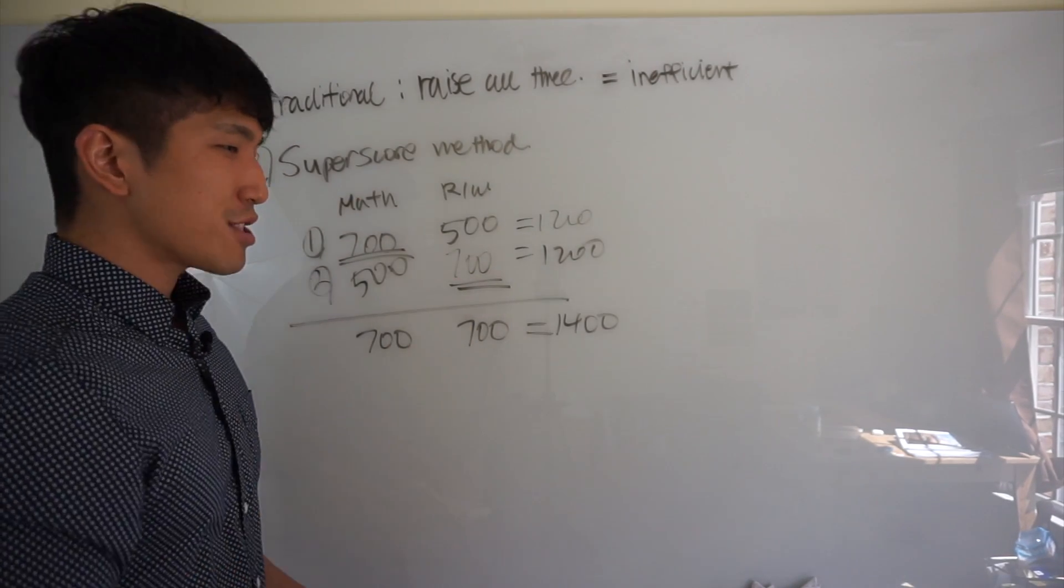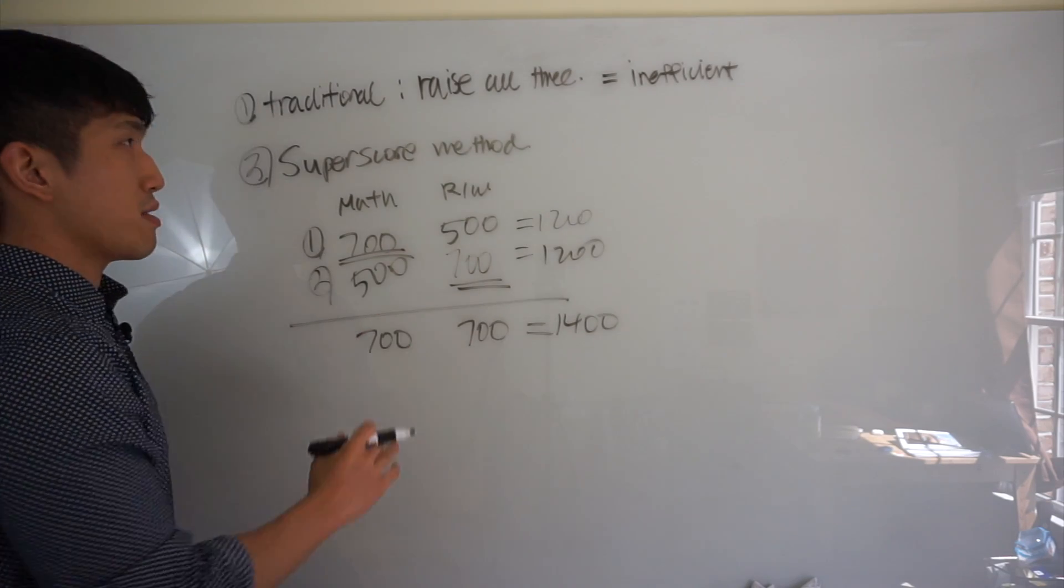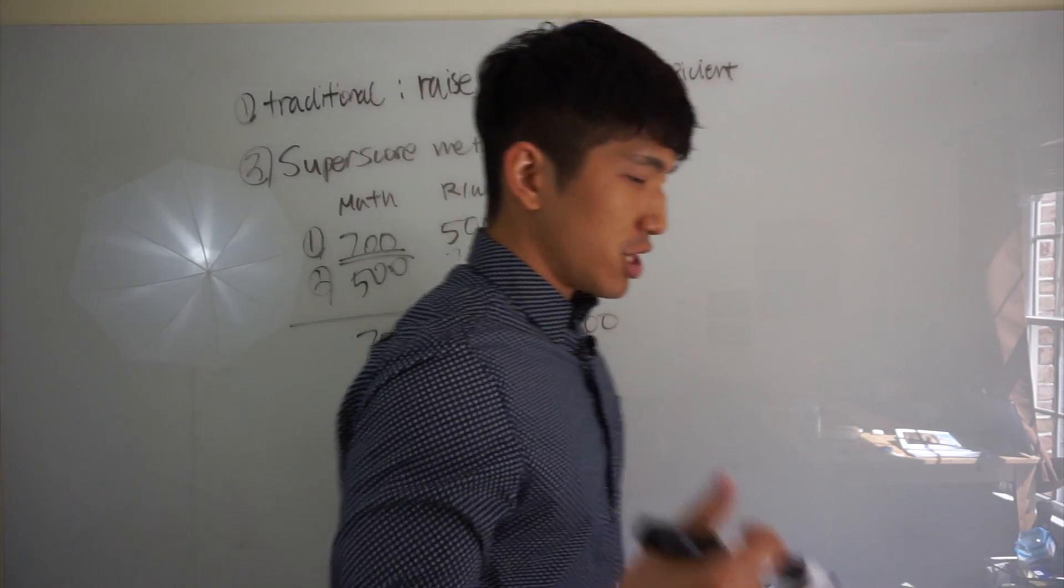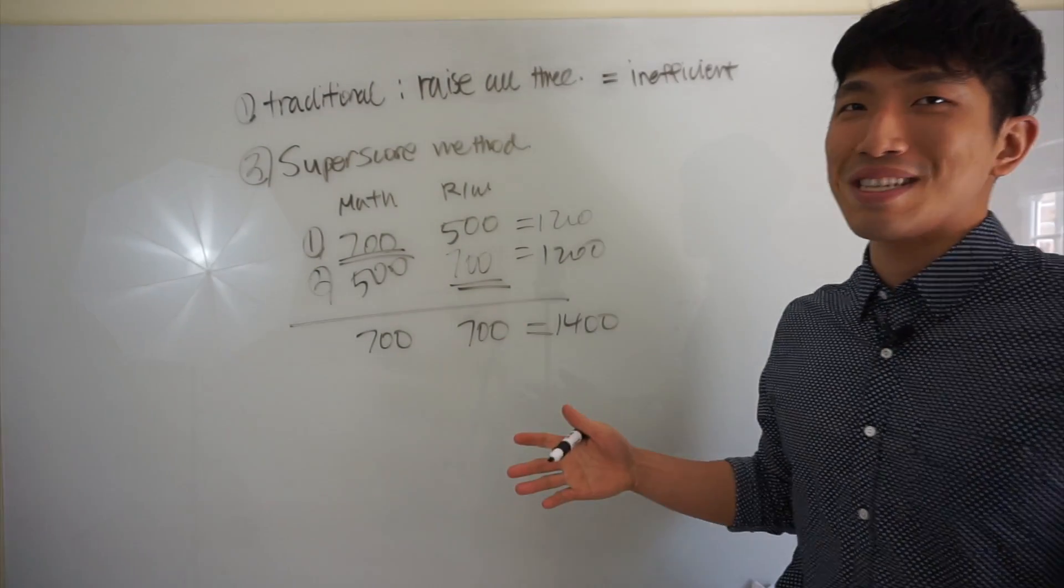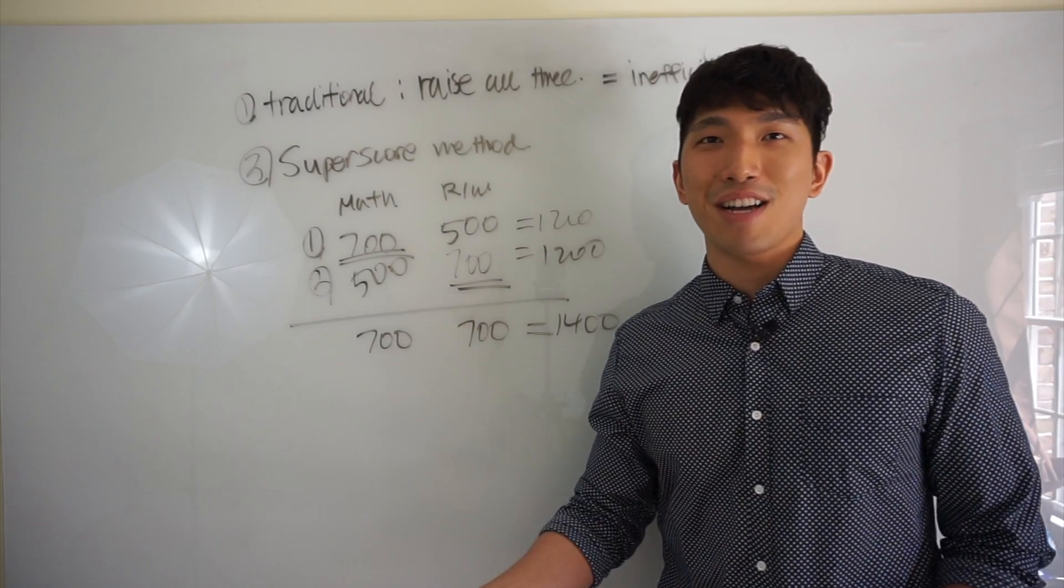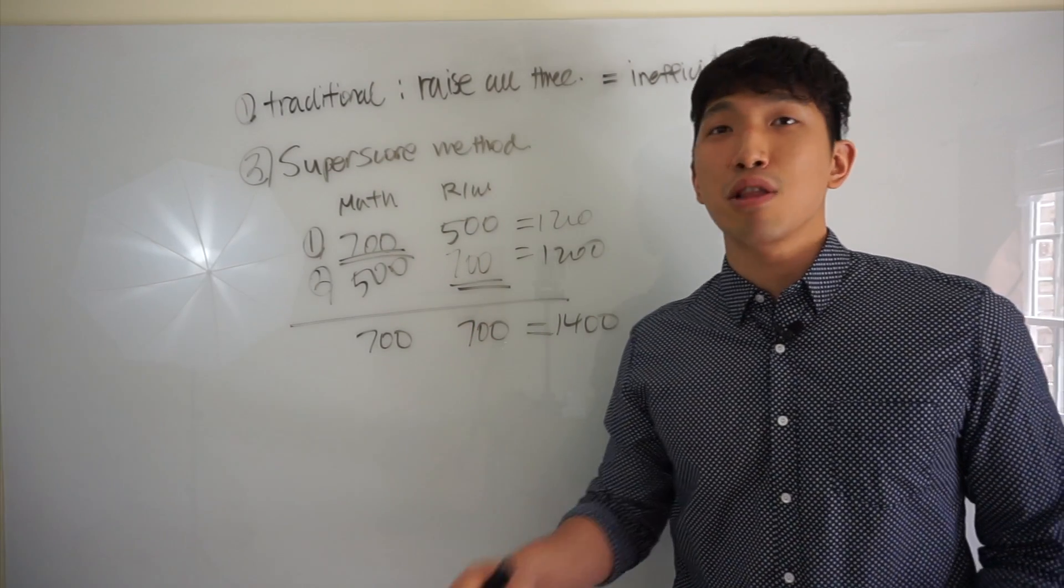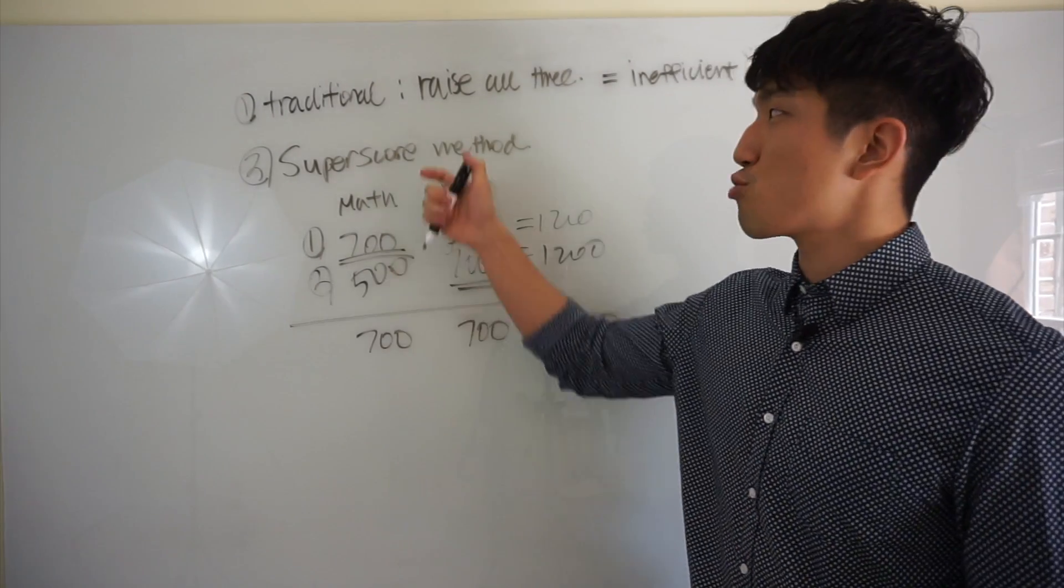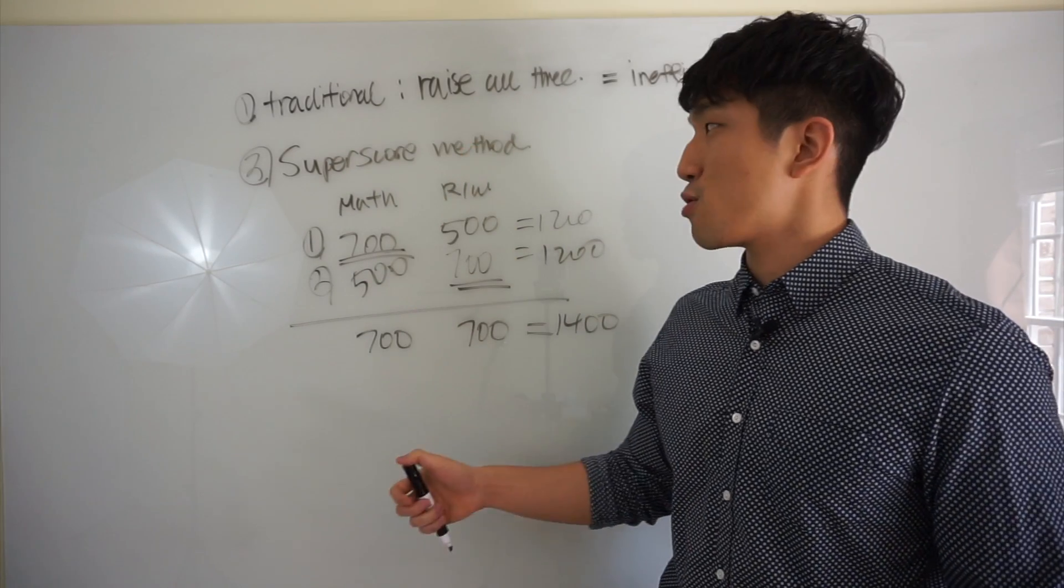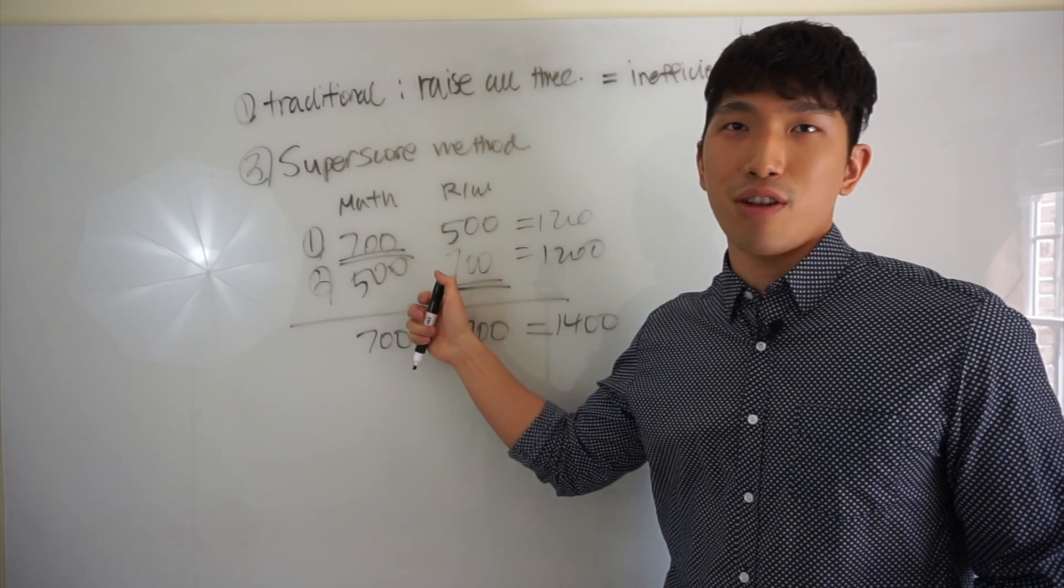So how does that solve the problem for traditional method? Well, remember what we talked about traditional method, when you're trying to raise all three things at the same time, your attention is divided, your time is divided, so your score is going to go up slower relatively.